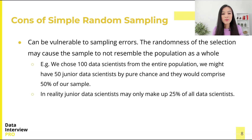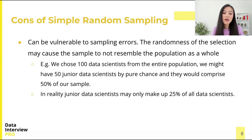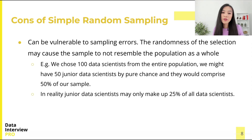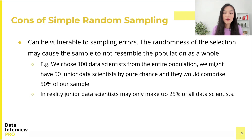For example, if we choose 100 data scientists from the entire population, we may end up with 50 junior data scientists by pure chance, which would comprise 50% of our sample. But in reality, junior data scientists may only make up 25% of all data scientists.